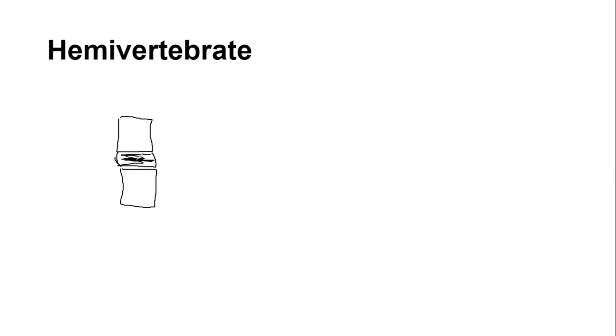Today we're going to be talking about hemivertebrae and the effects they have on the spine. Normally when you're born, you have vertebrae in your spine that line up one on top of the other, and between them you have something like a piece of rubber — that's called the disc. The vertebrae are the bones of the spine, and between them you have discs.